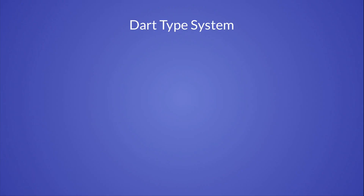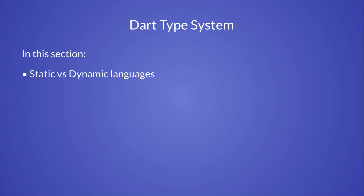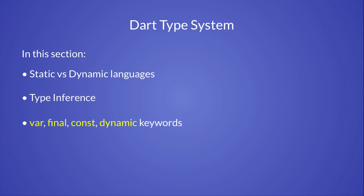In this section, we are going to learn about the Dart type system. As part of this, we will learn what it means for a language to be statically or dynamically typed. We will talk about type inference, which is a feature of the Dart language that helps you declare variables without having to specify their type explicitly. We will learn about the var, final, const, and dynamic keywords — what they mean, what their differences are, and when you should use each of them. By the end of this section, you'll have a better understanding about the Dart type system and how to use it to your advantage.